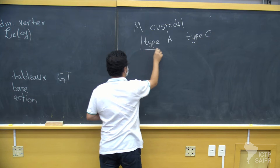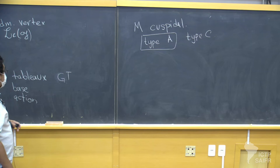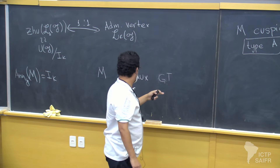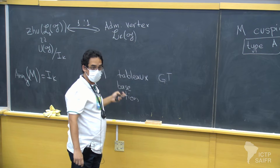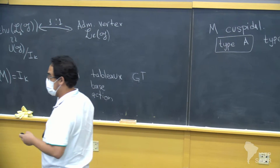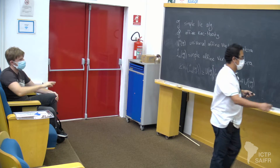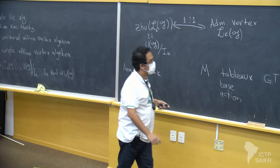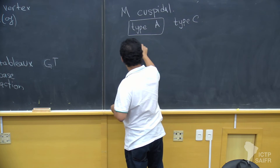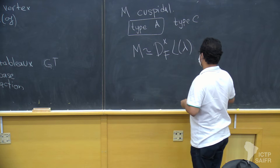Now we describe the cuspidal module of type I. The problem is when the cuspidal module of type I is in a block where the annihilator of n equals i_k. In general in this case, we cannot say that n is isomorphic to this formative form.